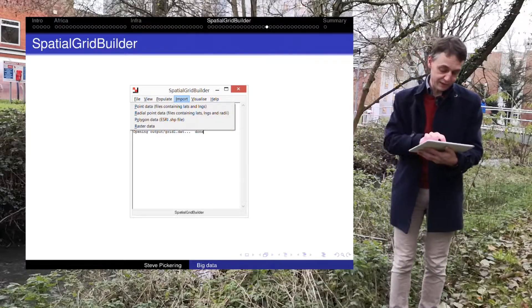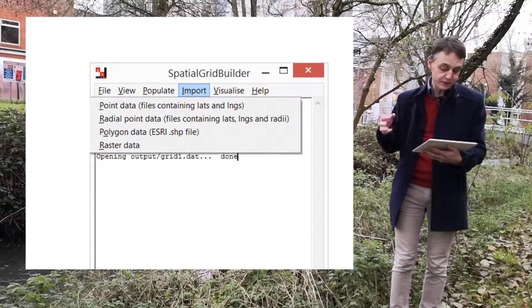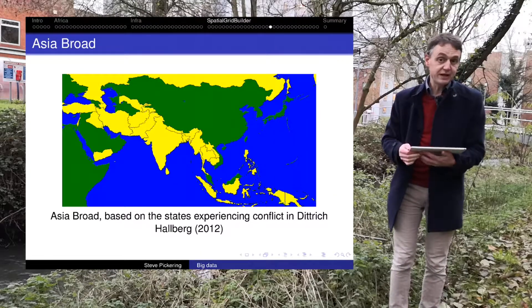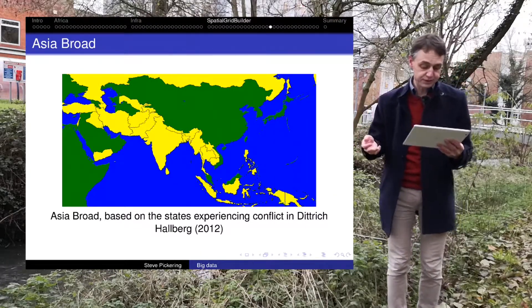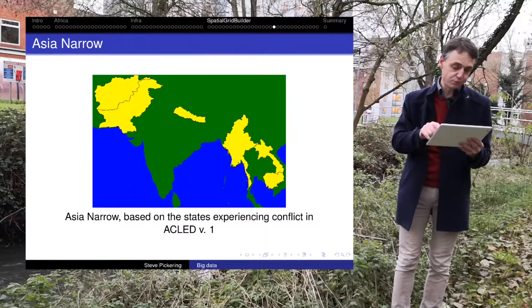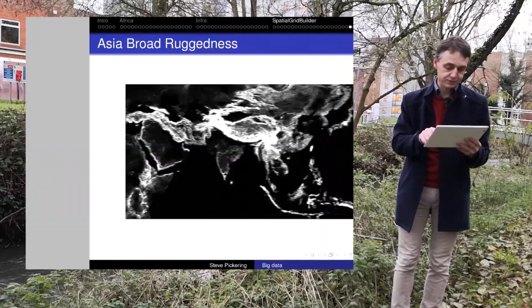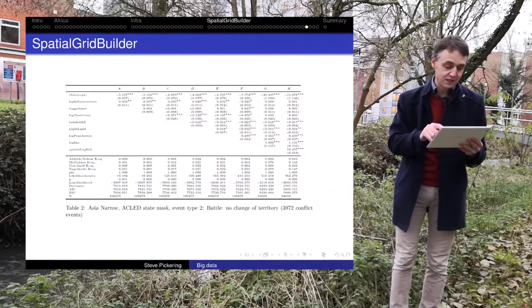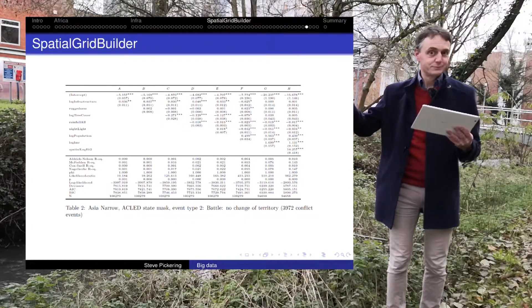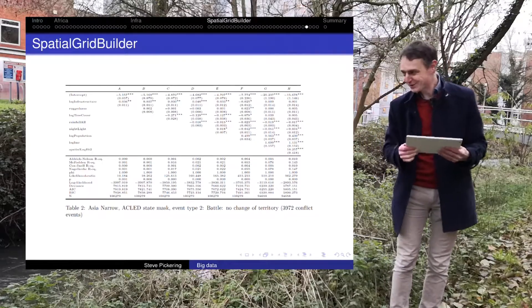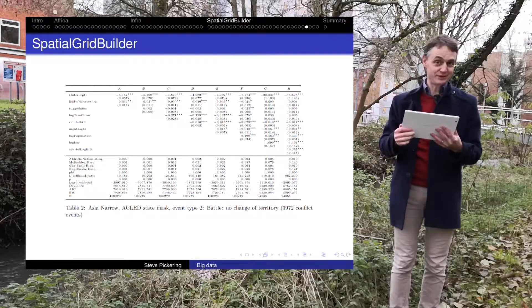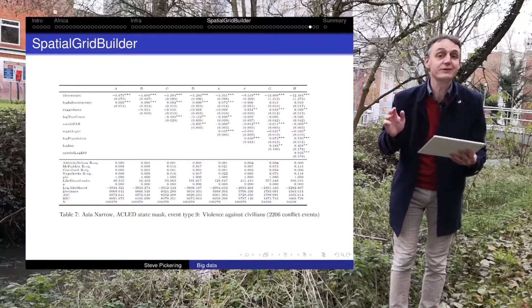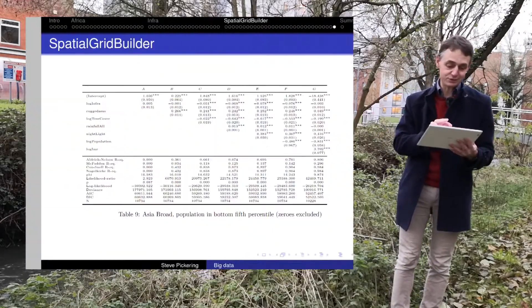You can also import your own data — your point data, radial point data, polygon data, or raster data — and that's why it's useful. We've presented the Asia Broad and Asia Narrow examples with infrastructure, tree cover, nightlights, and ruggedness. From all of that we get a regression table, which is well beyond the scope of this video to explain, but I can talk about it in the seminars. The key point is we can link our spatial factors to conflict or any other dependent variable you're interested in.